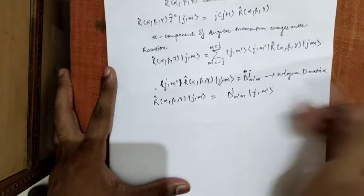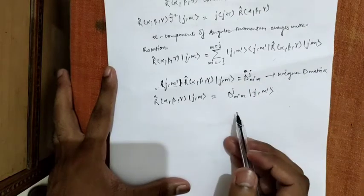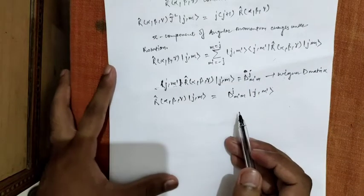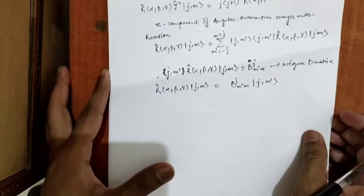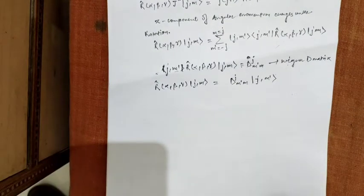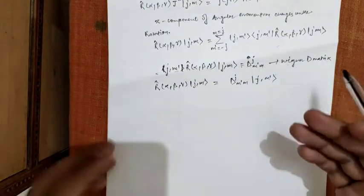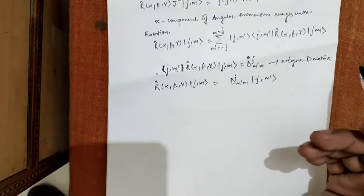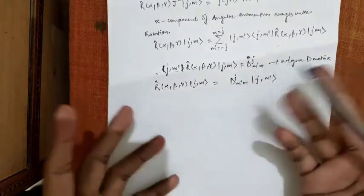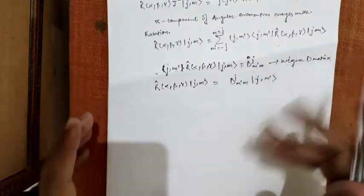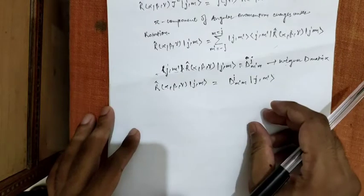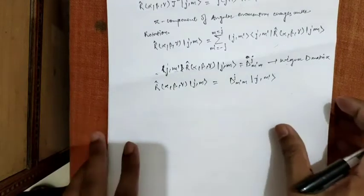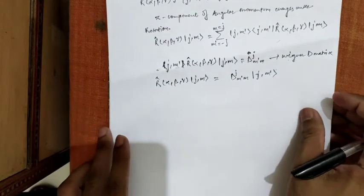The elements of this Wigner D-matrix are known as Wigner functions. This whole representation is also referred to as the 2j+1 dimensional irreducible representation of the rotational operator R(α,β,γ).